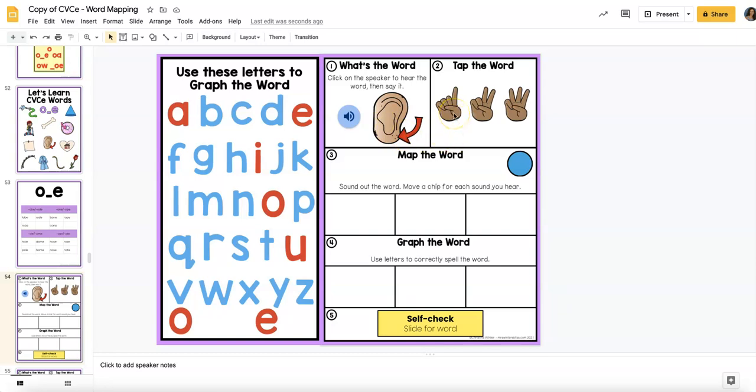They're first going to tap the word. So they'll say L, O, B. They're going to tap it. Then they're going to map it. Three sounds for each phoneme. And then they're going to drag the letters over to make the word.